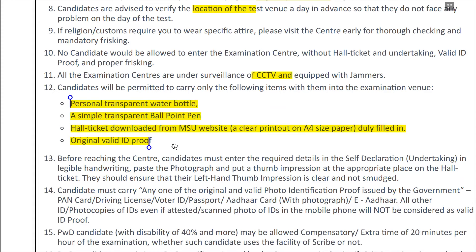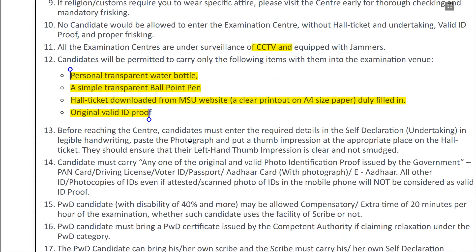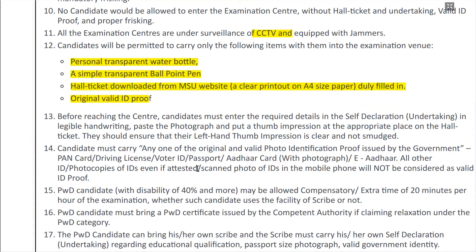You can download the hall ticket and also apply the photo to it. For the self-declaration form, you have to write your details, attach the photo, and sign the form. For original ID proof, accepted documents include voter ID, passport, Aadhaar card, driving license, and PAN card — you can carry the original or a scanned printout.